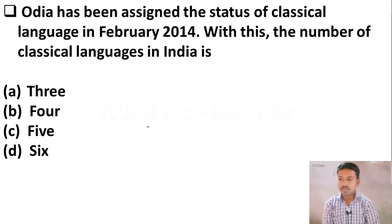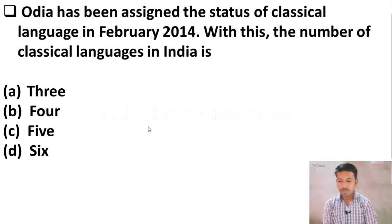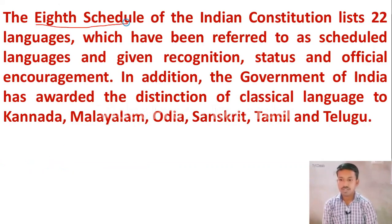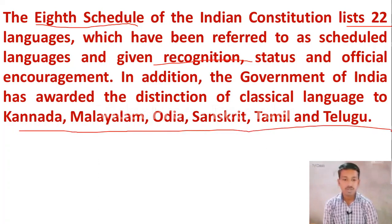Next question: Odia has been assigned the status of classical language in February 2014. With this, the number of classical languages in India is — Option A: 3. Option B: 4. Option C: 5. Option D: 6. We are now having 6 classical languages in India. The 8th Schedule of the Indian Constitution lists 22 scheduled languages. In addition, the Government of India has awarded classical language status to 6 languages: Kannada, Malayalam, Odia, Sanskrit, Tamil, and Telugu.